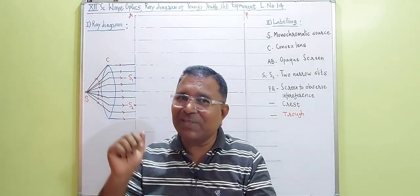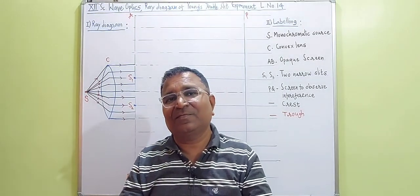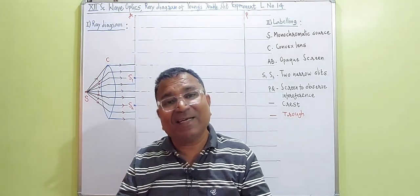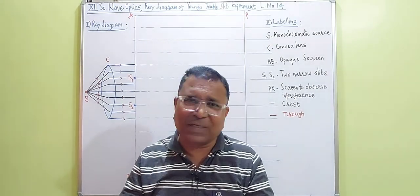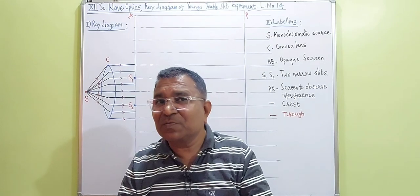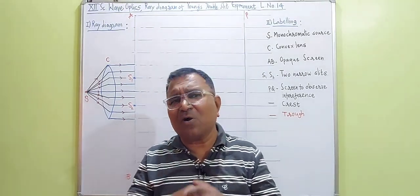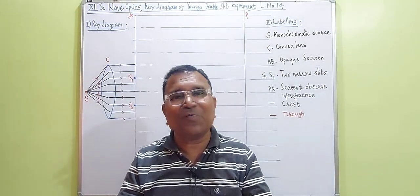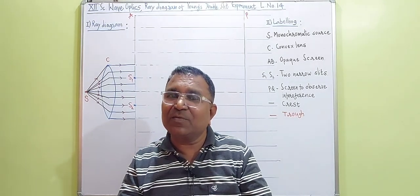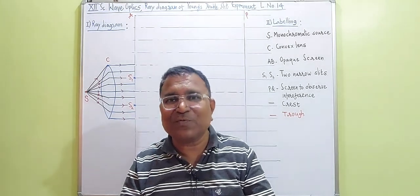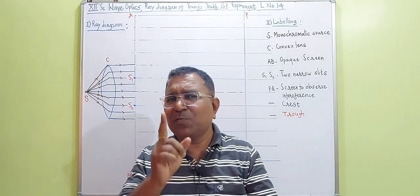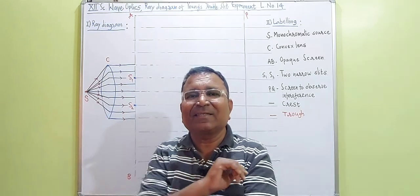As far as Class 12 Science optics is concerned, this is lecture number 14. In this lecture we are learning how to draw the ray diagram of Young's double slit experiment. Remember, today's lecture is a workshop for you, because many students have lots of difficulty with this diagram. I will try my level best to make it easy for your examination. The name of our channel is 'Physics Make It Simple.'